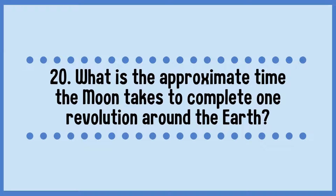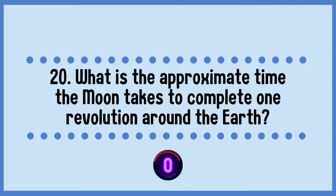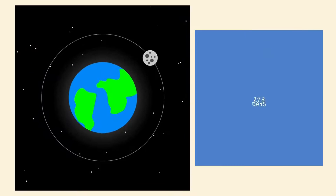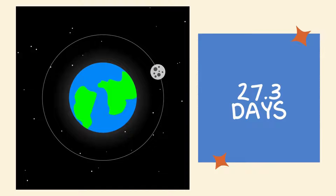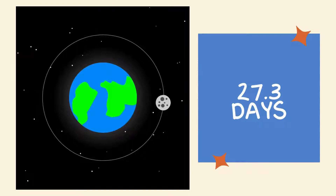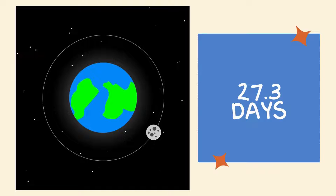What is the approximate time the moon takes to complete one revolution around the Earth? The moon takes approximately 27.3 days to complete one revolution around the Earth.